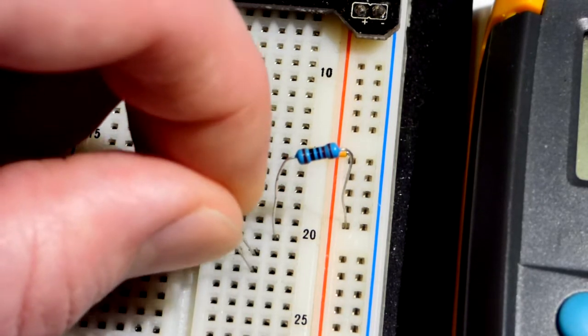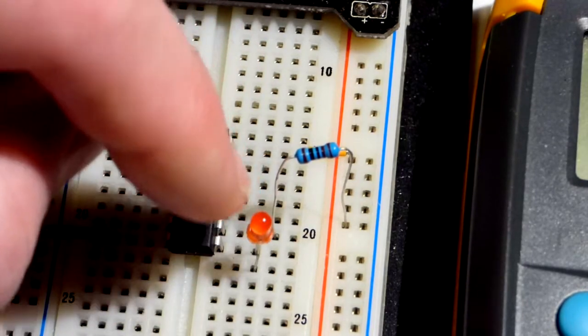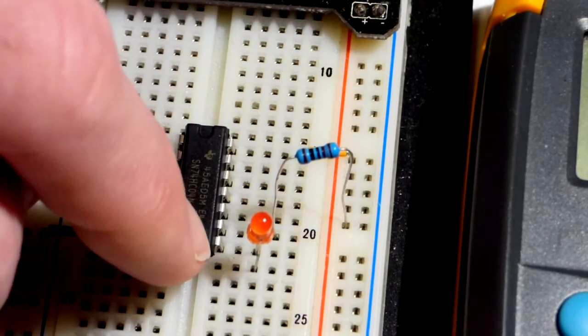We're going to put the long lead, the anode there, so when the red LED lights up, we know the output is more positive.